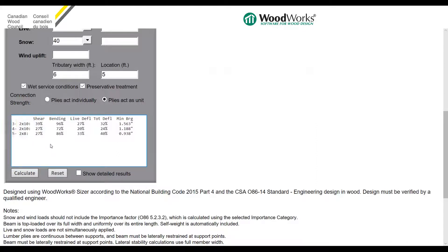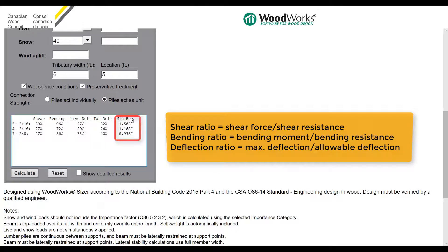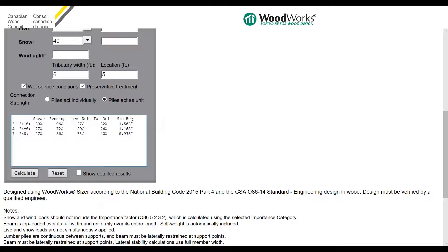The Beam Calculator also displays the shear ratio, bending ratio, live and total deflection ratio, as well as the minimum bearing length required at the supports. For example, for the first available beam, it is at 96% capacity, where 100% means the beam is loaded to its full capacity.